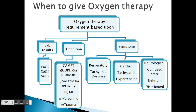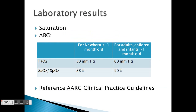Conditions that indicate oxygen therapy can be abbreviated as CAMPT: COPD and cor pulmonale, post-anesthesia recovery, myocardial infarction, poisoning by carbon monoxide or cyanide, and trauma. Symptoms are divided into respiratory, cardiac, and neurological. Respiratory symptoms are tachypnea and dyspnea. Cardiac symptoms are tachycardia and hypertension. Neurological symptoms are confused state, delirium, and disorientation.